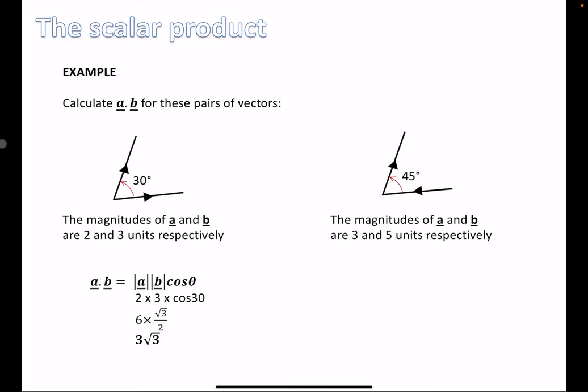However, when we have a situation where the vectors are not tail to tail, we've got to pay attention to the arrows. We can't use the angle shown directly — we need the angle between the positive directions of the two vectors. Moving one vector down, I find the angle to use is 135°. cos(135°) is in the second quadrant, where cosine is negative — it's negative cos(45°) = -1/√2. Multiplying by three and five gives us -15/√2. So be careful with diagrams and where the vectors are pointing.